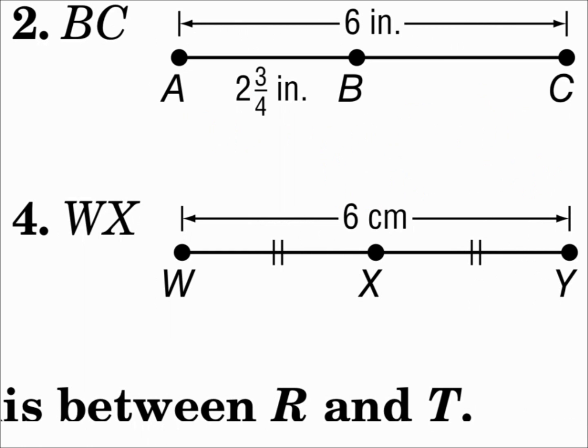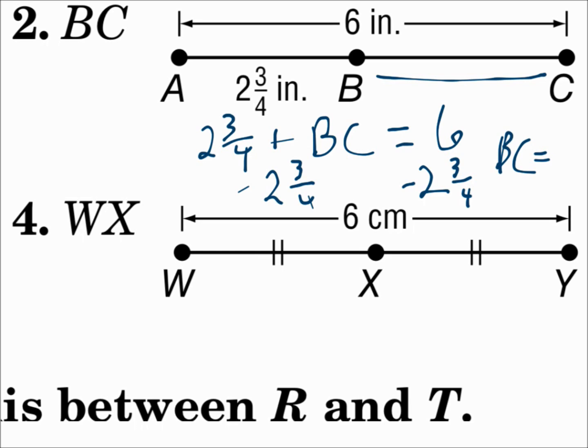The length of segment BC. Well, the parts add up to the whole thing. 2 and 3/4 plus BC, which is the other part, equals the whole thing 6. If you subtract 2 and 3/4 inches from each side, BC is going to equal 3 and 1/4 inches.